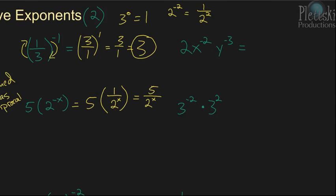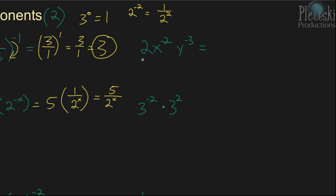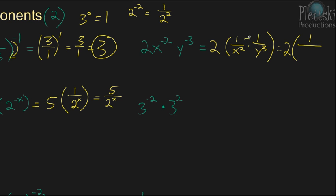The next example: 2 times x to the negative 2 power times y to the negative 3 power. We have 2 times 1 over x squared times 1 over y cubed. When you multiply fractions, you multiply straight across — numerator times numerator, denominator times denominator. So, you get 1 times 1, which is 1, over x squared times y cubed. Then multiply by 2 to get 2 over x squared times y cubed.